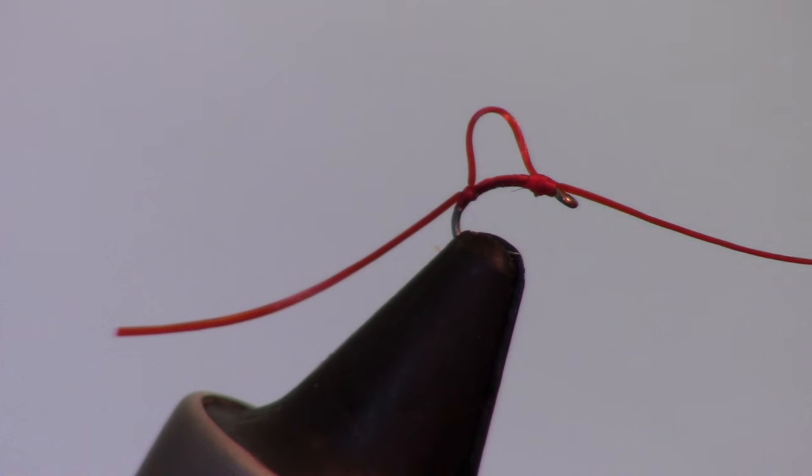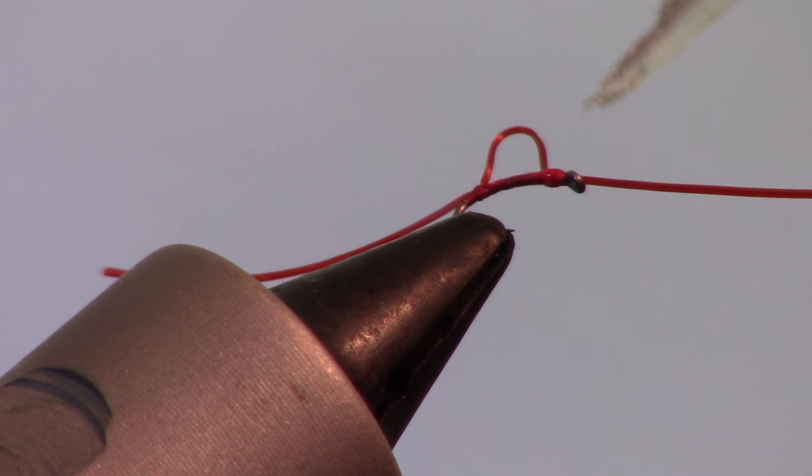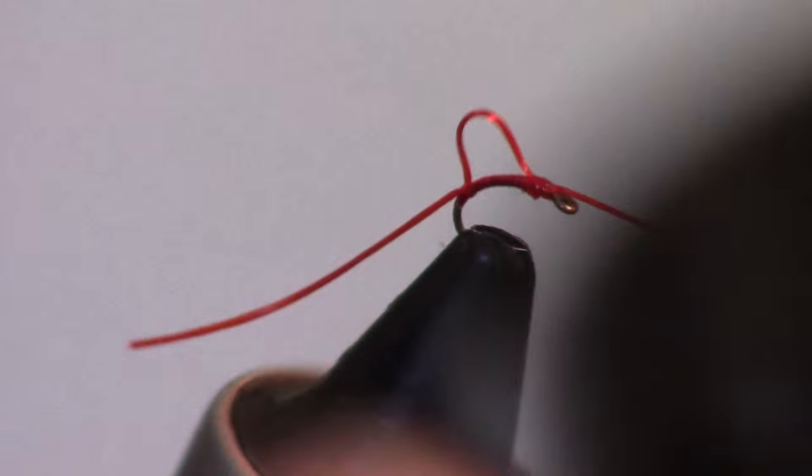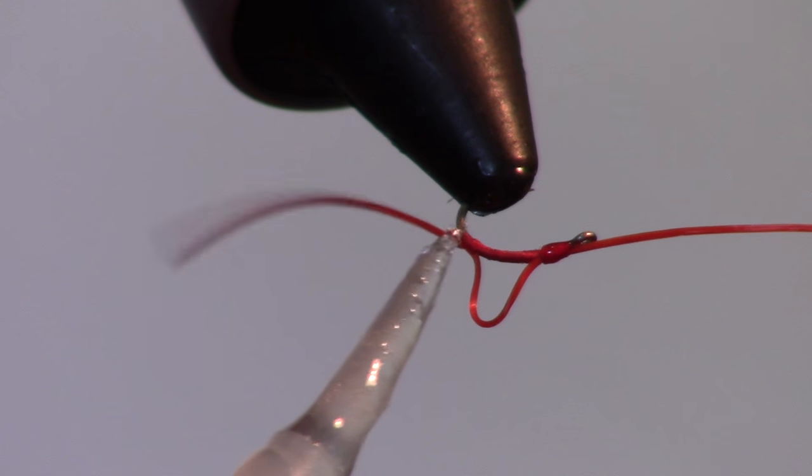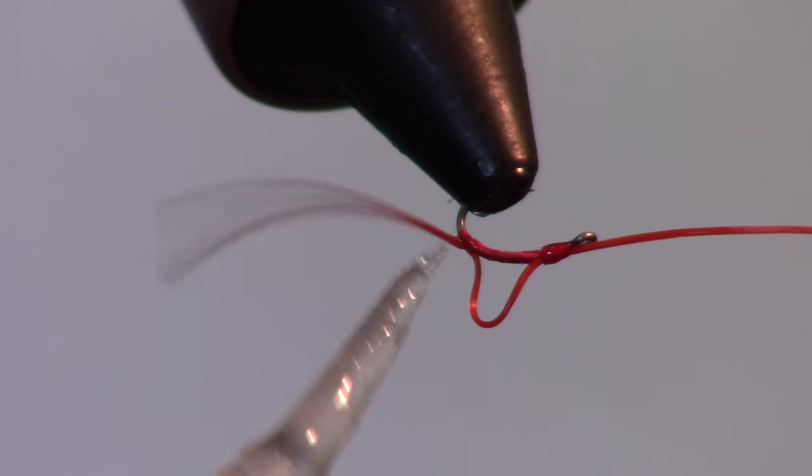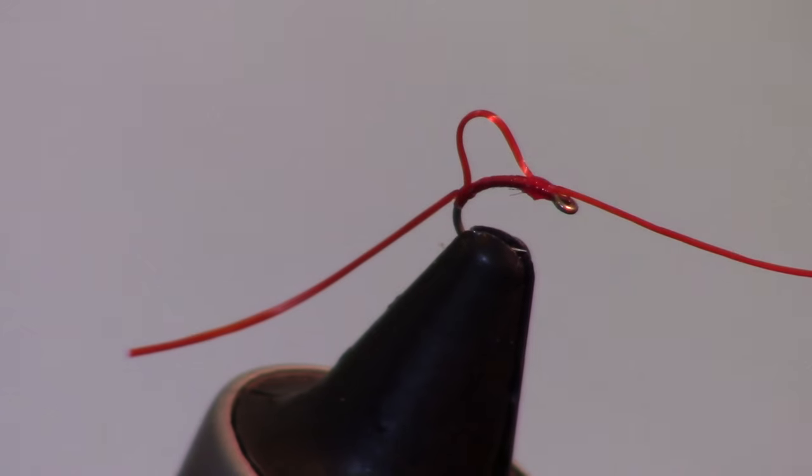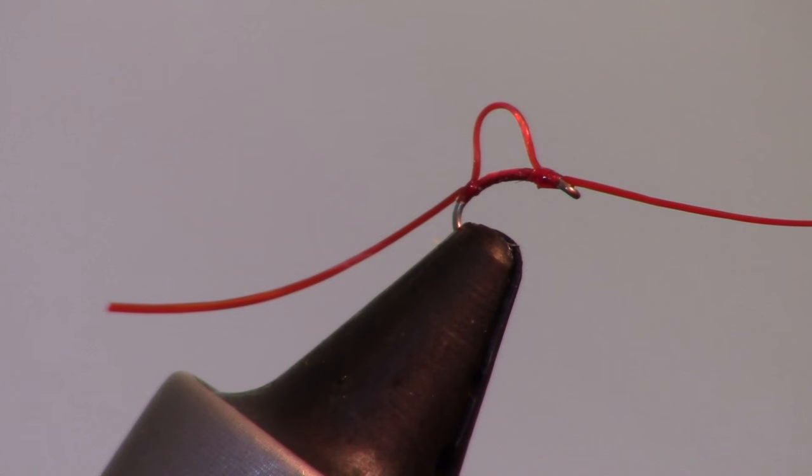To really lock everything in place, I add a bit of UV curing resin. This resin is called Bone Dry and is made by Solarez. Once you add it to both knots, just quickly zap it with your light and the fly is ready to fish.